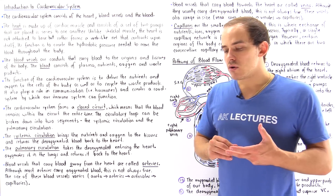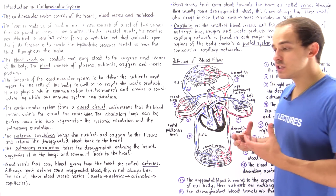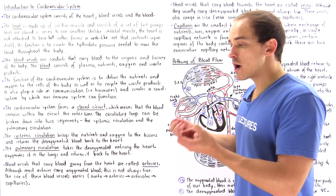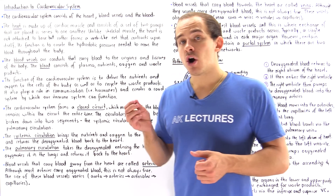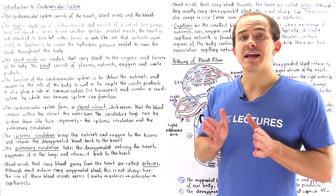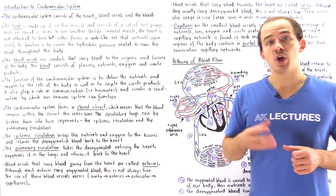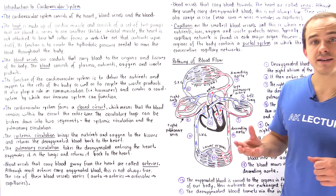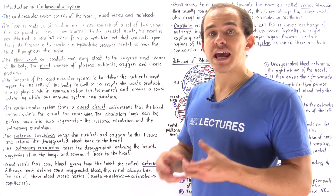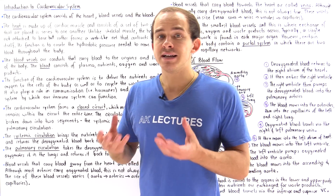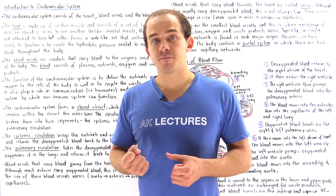Unlike skeletal muscle, which is actually attached to our bone and contracts with the bone, the heart is not actually attached to any bone. The heart consists of cardiac muscle, which forms a web-like net that contracts upon itself.